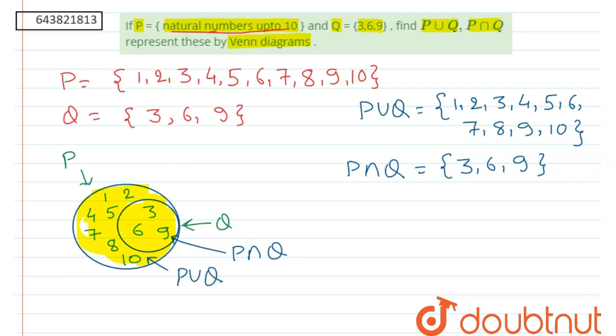From diagram we can also say that P union Q is set P itself and P intersection Q is set Q itself. Thank you.